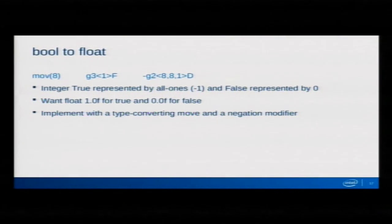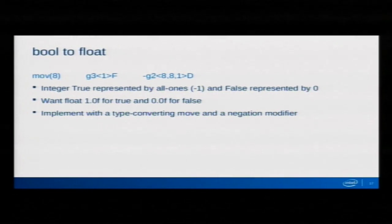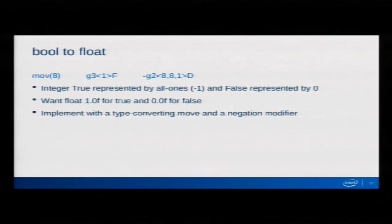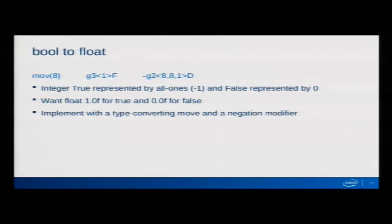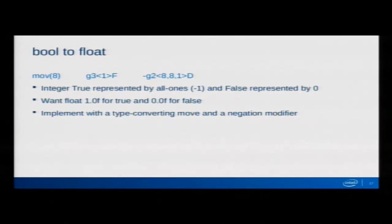Here's how we convert a Boolean value to a float. We represent true and false as all 1s and all 0s. We want to produce 1.0 float for true and 0 for false. We read the Boolean as an integer — which is negative 1 for true, 0 for false — use a negation source modifier to flip negative 1 to positive 1, and then do a type-converting move to actually convert it into a float.